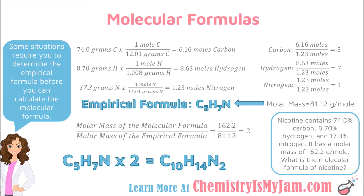Nicotine has a molar mass of 162.2 g/mol, so I am going to turn this empirical formula into a molecular formula that must have this molar mass. Using the equation: molar mass of molecular formula divided by molar mass of empirical formula. The molar mass of the molecular formula was given; I calculate the empirical formula's molar mass by adding 5 carbons, 7 hydrogens, and 1 nitrogen from the periodic table, giving 81.12 g/mol. Dividing 162.2 by 81.12 gives a whole number of 2.